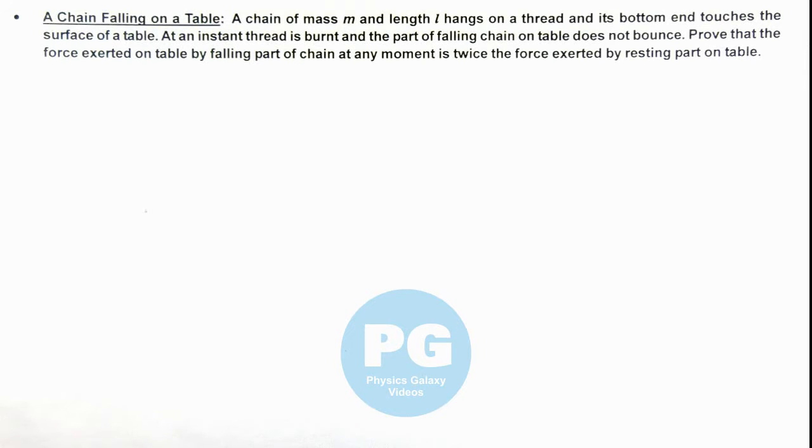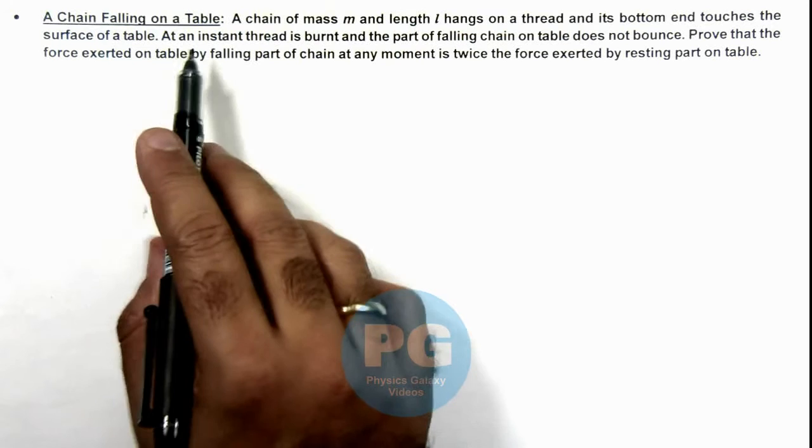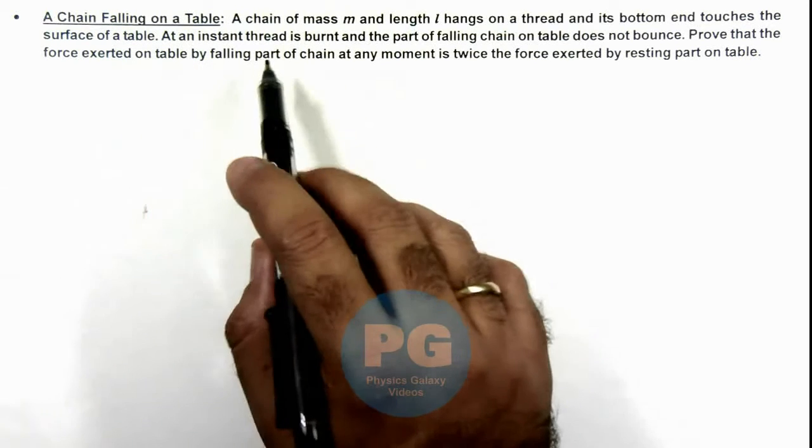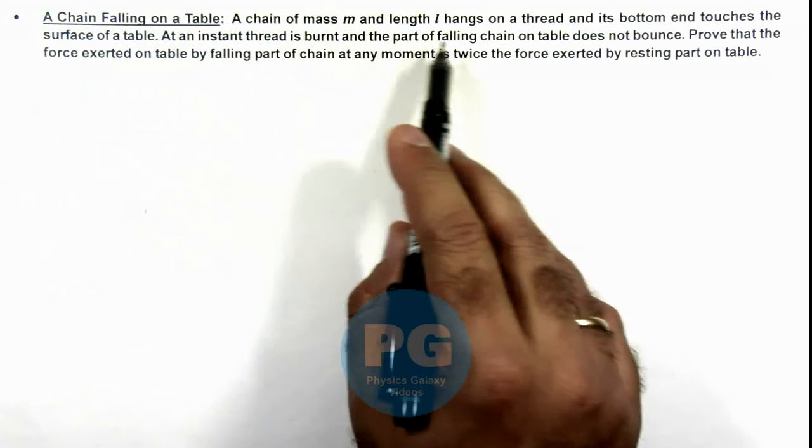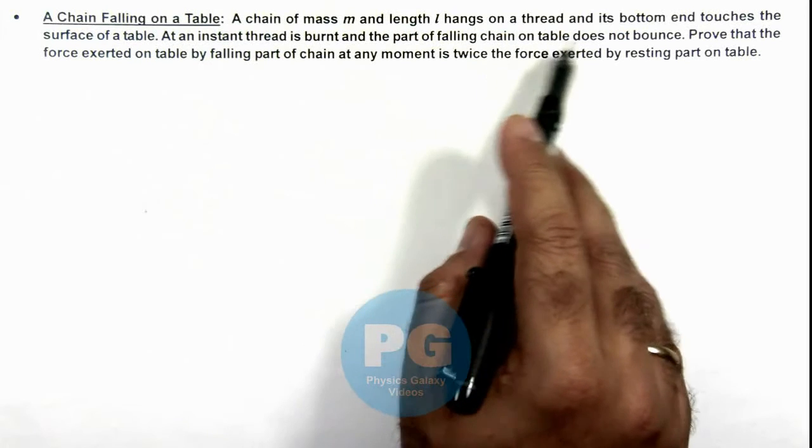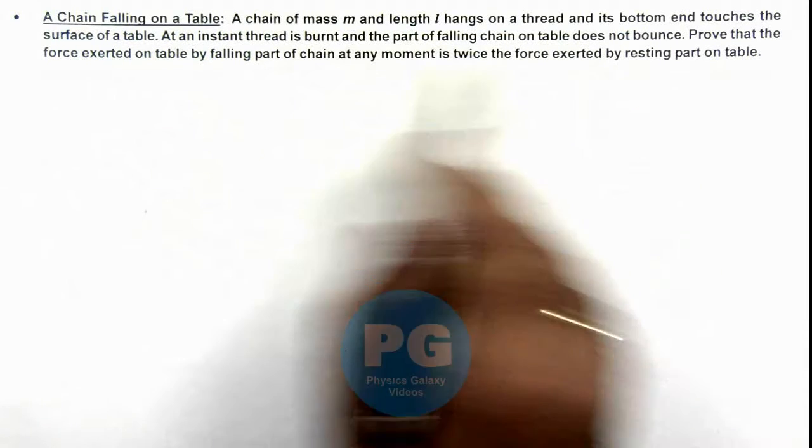In this illustration we'll analyze a chain falling on a table. We are given that a chain of mass m and length l hangs on a thread, and its bottom end touches the surface of a table.